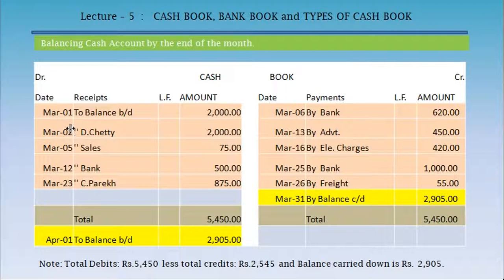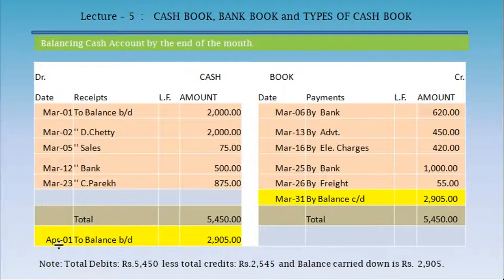Similarly, we balance the cash book: total debits Rs. 5,450, total credits Rs. 2,545, and the balance carried down is Rs. 2,905. We record it on the credit side as the total debits are more: March 31, by balance carried down Rs. 2,905, and carry it forward to April 1 as to balance brought down Rs. 2,905.